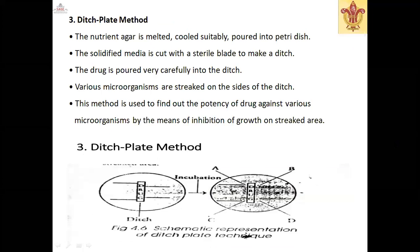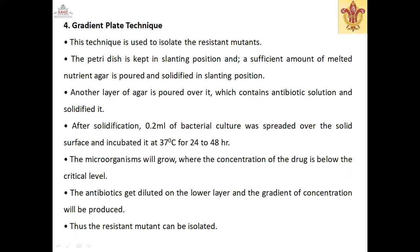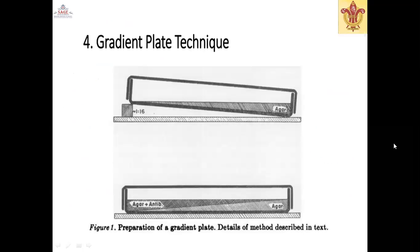Gradient plate technique: this technique is used to isolate resistant mutants. The petri dish is kept in a slanted position, and a sufficient amount of melted nutrient agar is poured and solidified at a slant. Another layer of agar containing the antibiotic solution is poured over it and solidified. After solidification, 0.2 mL of bacterial culture is spread over the solid surface and incubated at 37°C for 24 to 48 hours. Microorganisms will grow where the concentration of the drug is below the critical level, as the antibiotic gets diluted in the lower layer producing a concentration gradient. Thus, resistant mutants can be isolated.